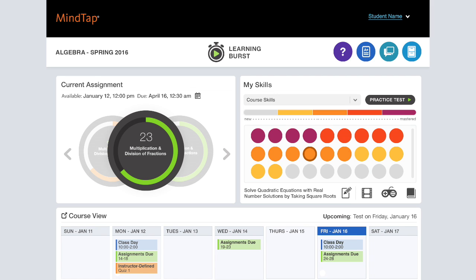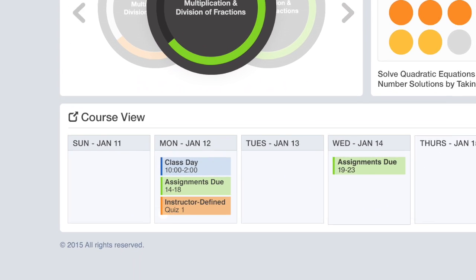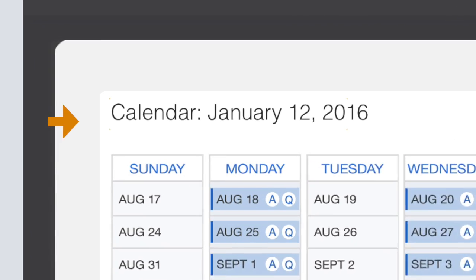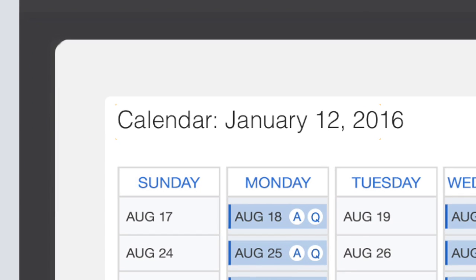Tracking what is due and seeing what's coming up is easy through the course view section. The date you select will appear at the top of the screen and in bold on the calendar. The daily details for that selected day will appear on the right side of the screen.